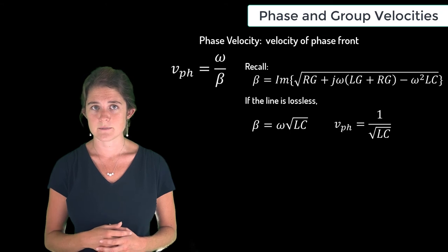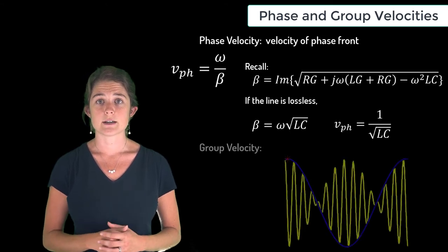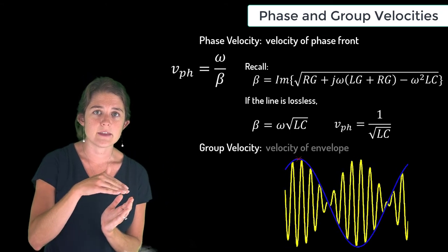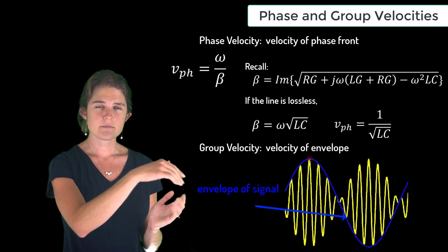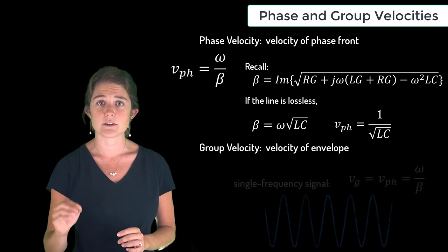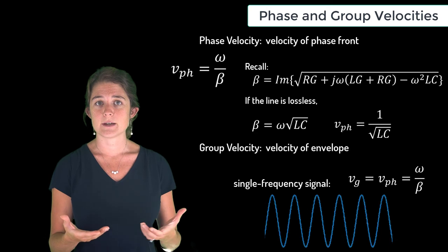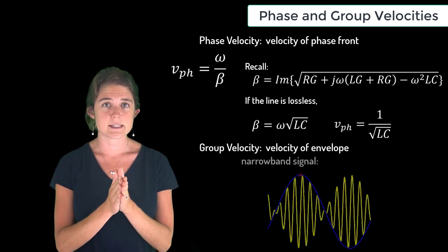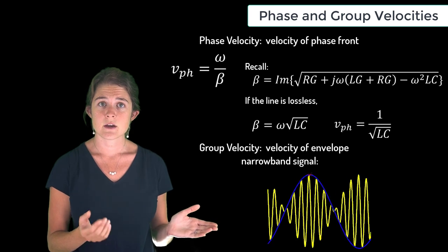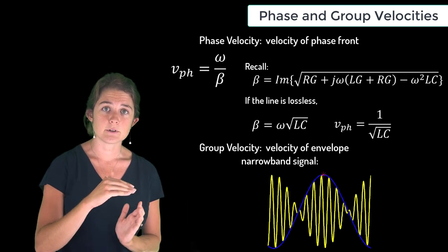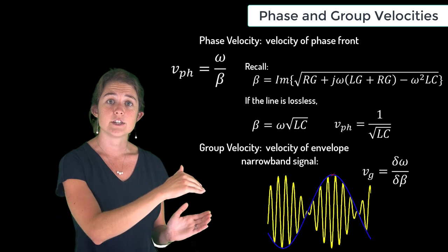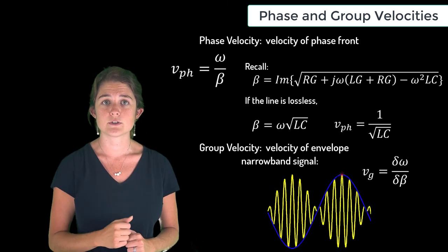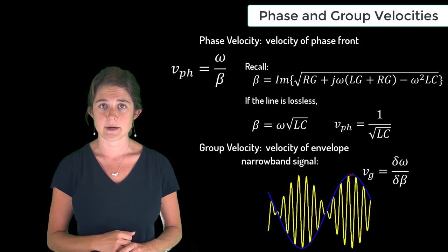Group velocity, on the other hand, is the velocity of the envelope of the wave. If a signal contains only a single frequency, the group and phase velocities are identical. However, if a signal consists of a narrow band of frequencies, the wave looks more like this, and this envelope moves with the velocity vg, which is given by the partial derivative of omega with respect to beta.